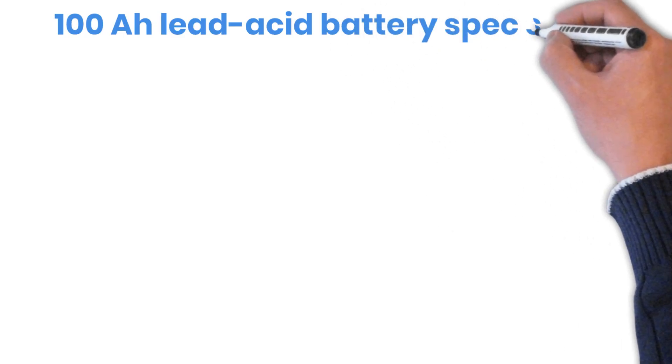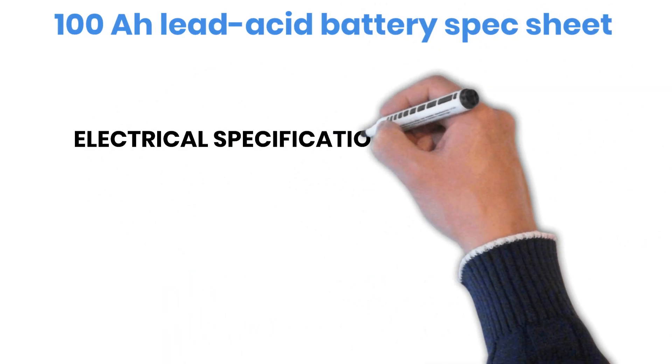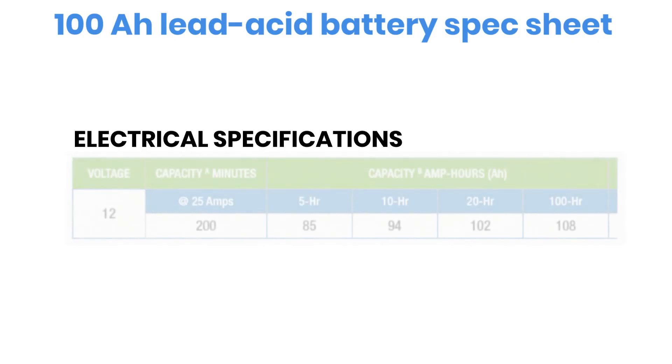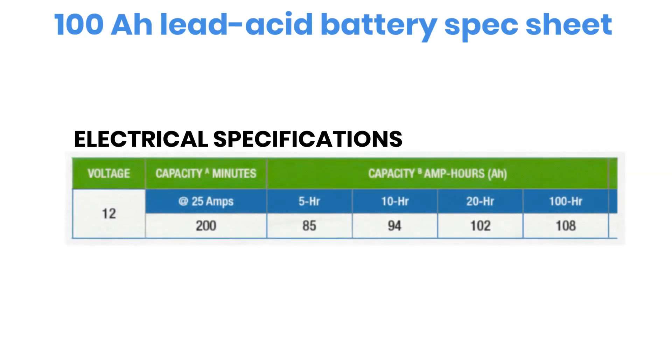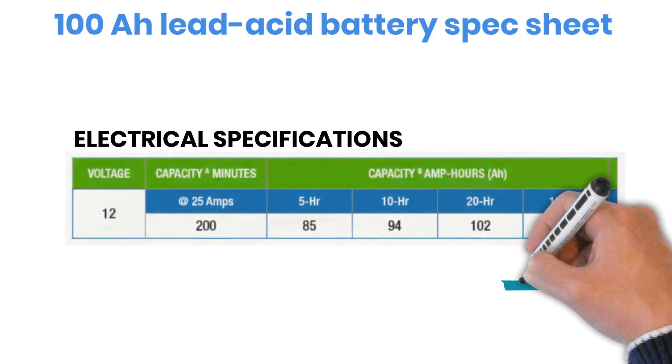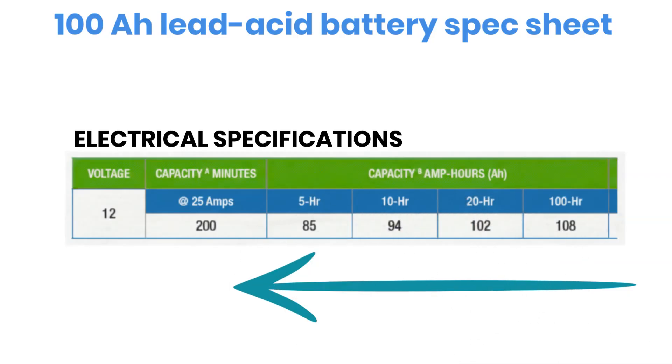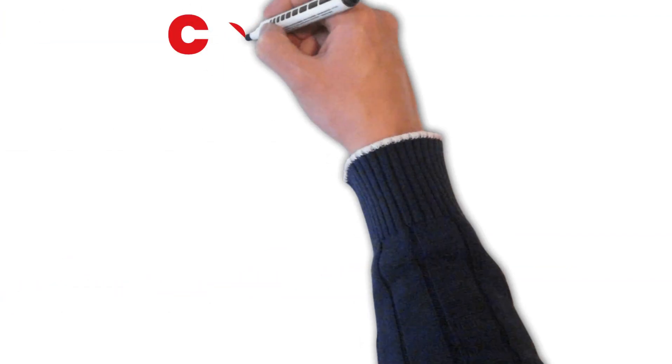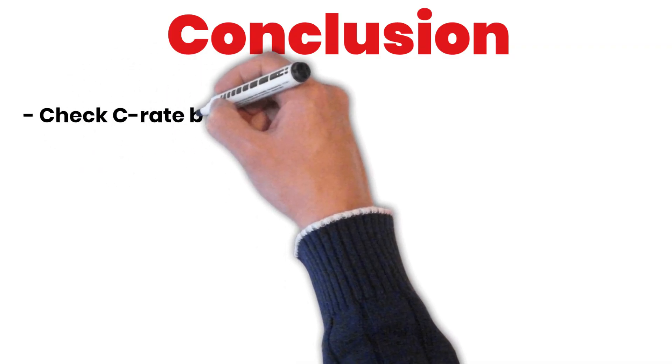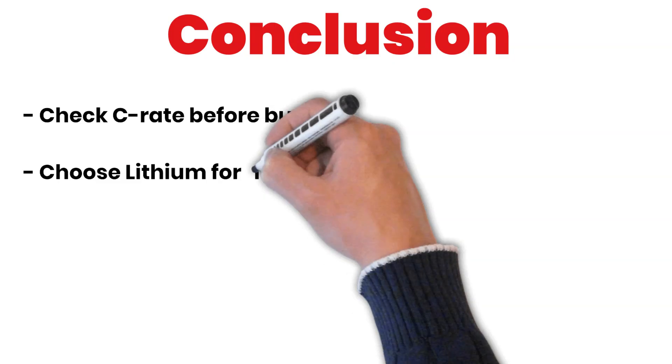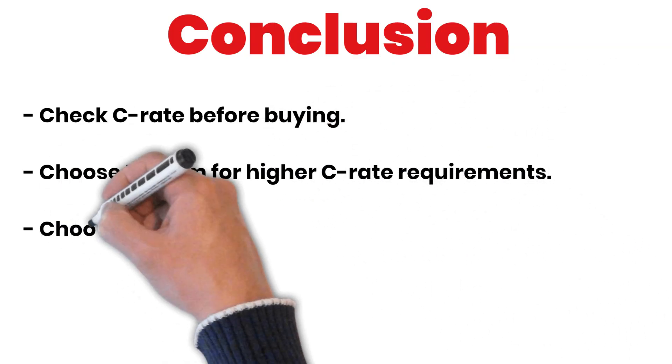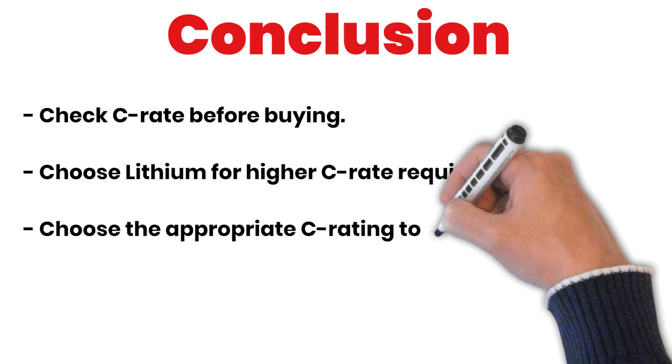Now let's talk about something most people overlook. When a lead-acid battery is discharged at a rate higher than its C-rating, its effective capacity drops. This happens because more heat is generated and internal resistance increases, making the battery less efficient. If you check the discharge graph for any good lead-acid battery, you'll see that higher C-rates lead to lower usable ampere-hours. That's why it's important to know the recommended charge and discharge C-rates before buying a battery for your solar setup. Lithium batteries generally support higher C-rates, while lead-acid batteries must be used within their limits to avoid premature capacity loss.